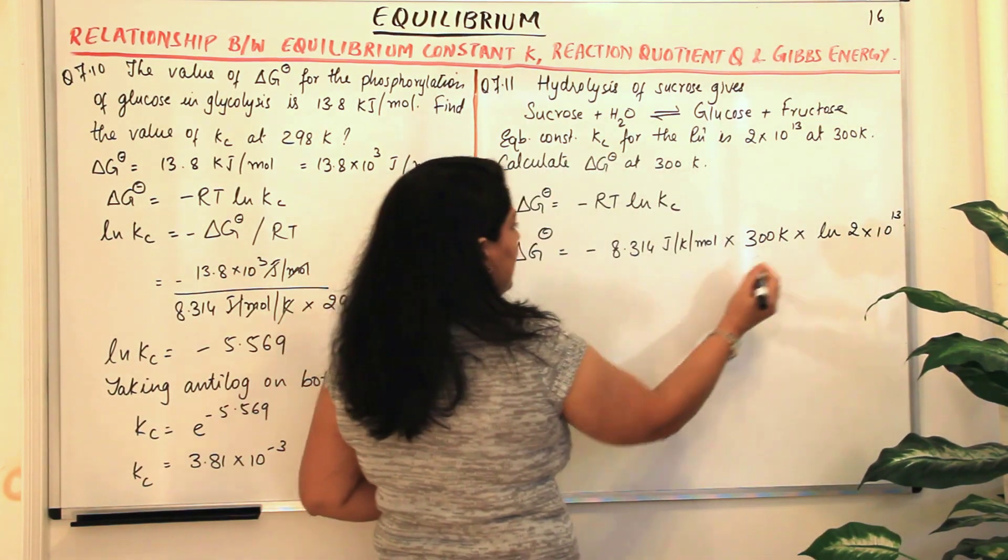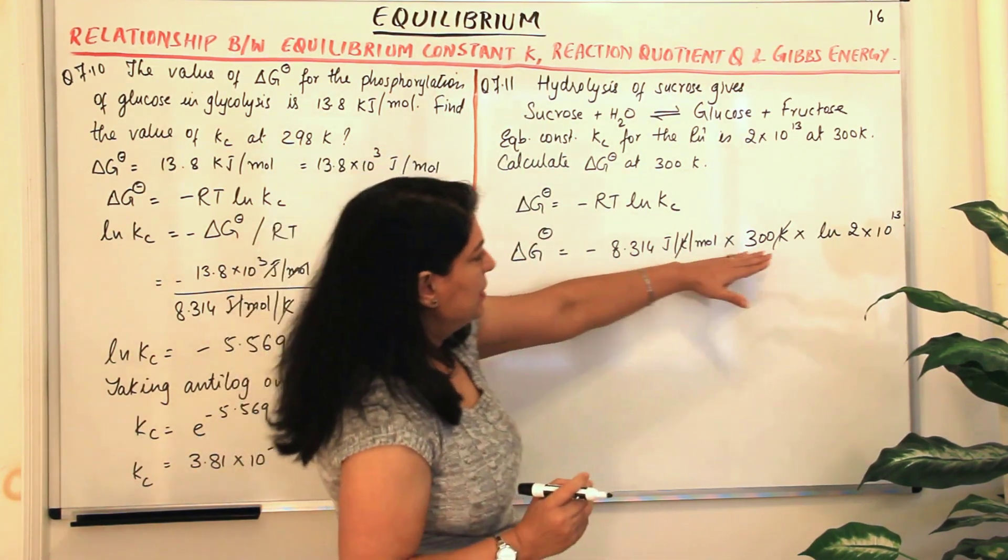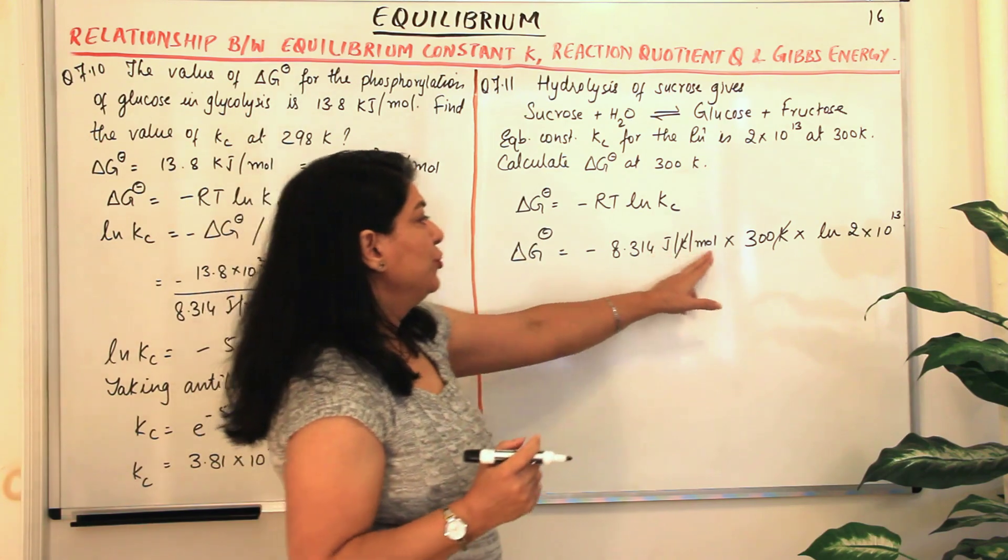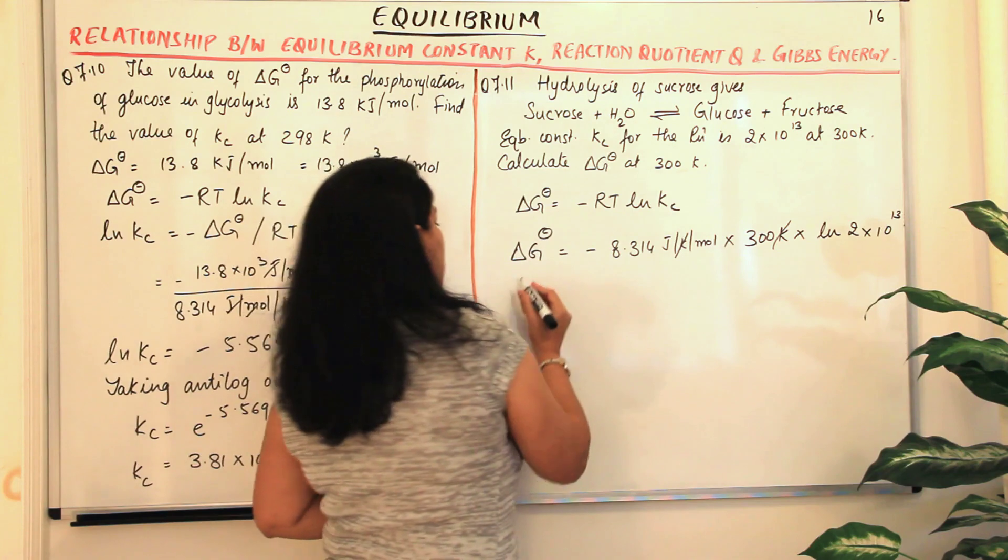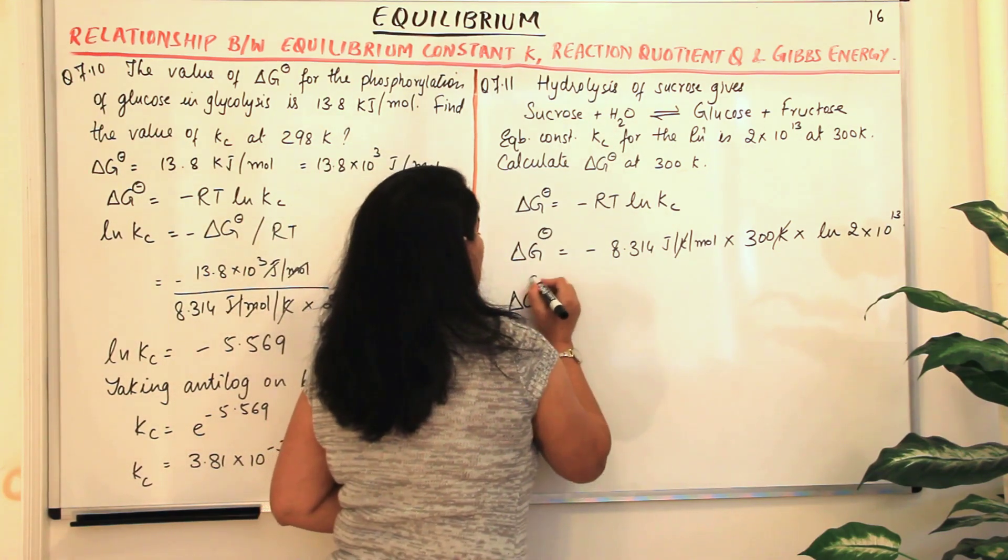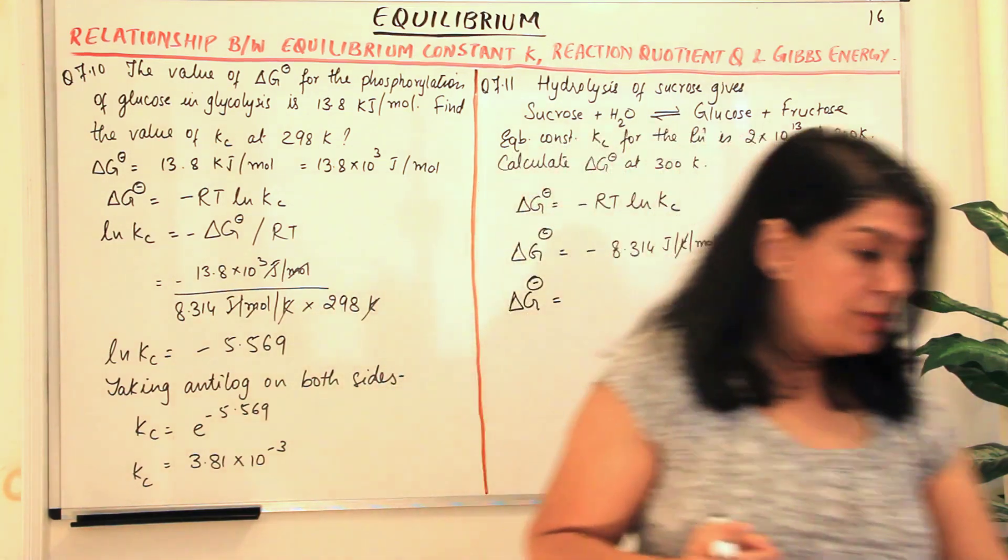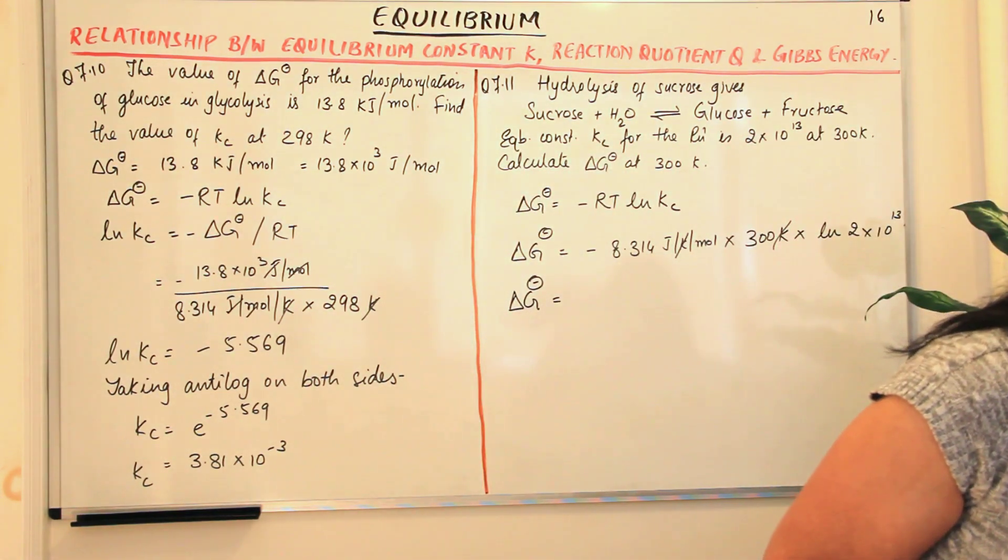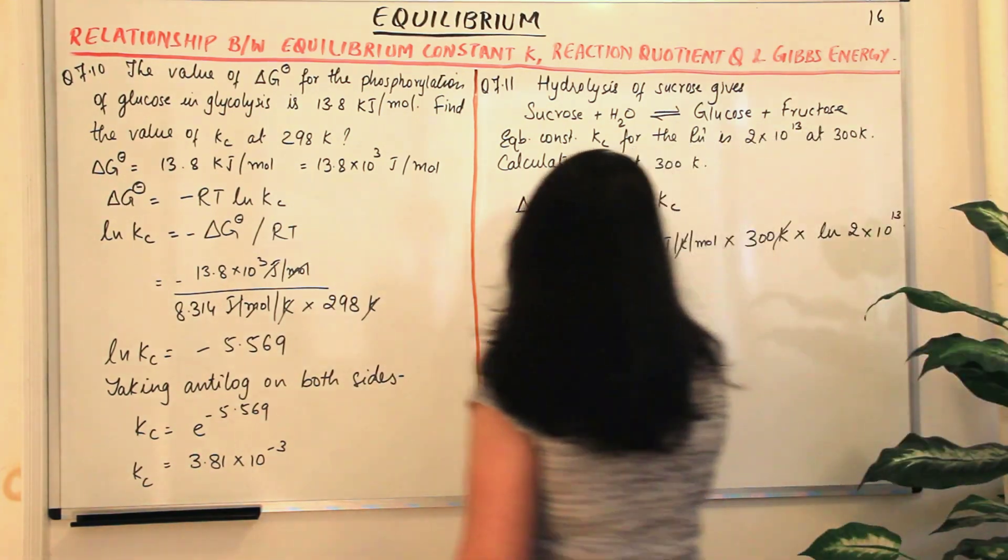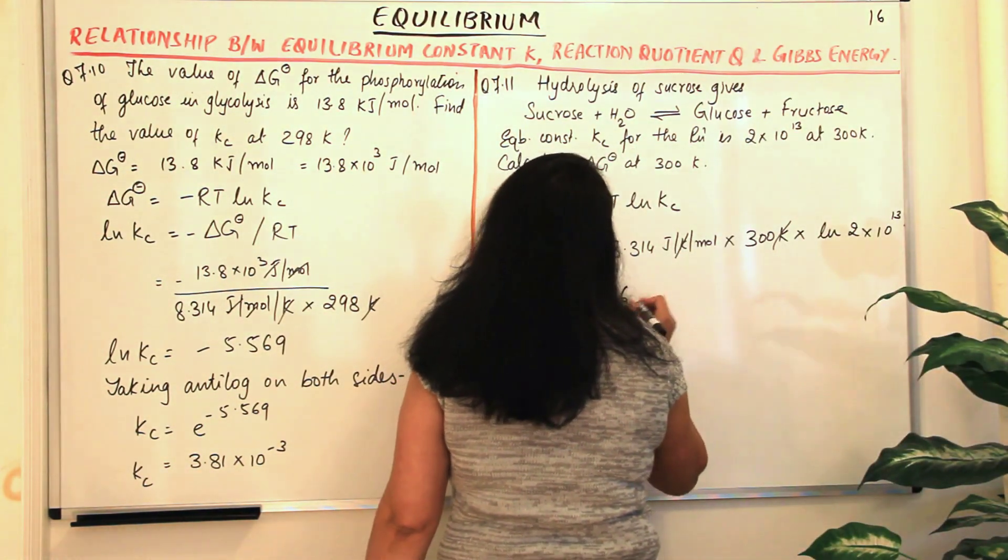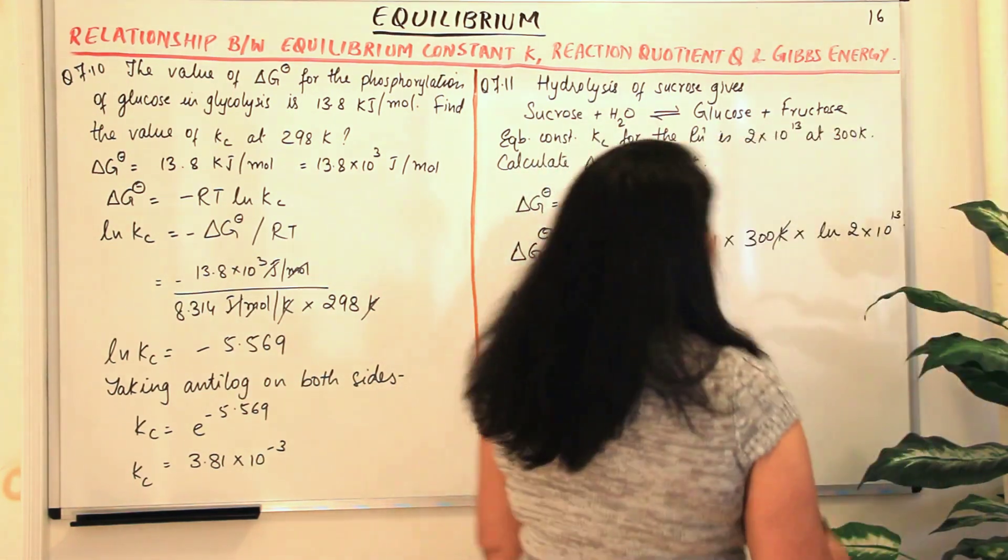Now we'll cancel out the units. Kelvin and Kelvin get cancelled, and you're left with joules per mole. So whatever numerical answer you get, the unit for delta G naught would be in joules per mole, which is right. The free energy change unit is joules per mole. When you solve this, this comes out to be equal to minus 7.64 into 10 to the power 4 joules per mole.